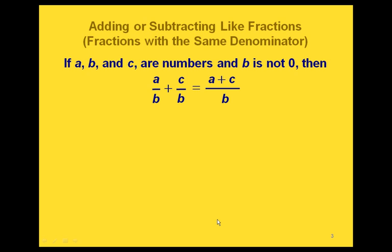Now we're going to look at how to add or subtract like fractions. If we have two fractions with the same denominator, both with a denominator of B, when we add these two fractions, we'll get the same denominator as whatever our common denominator was, and on the top of our fraction, we add the numerators from the two fractions that we started with.